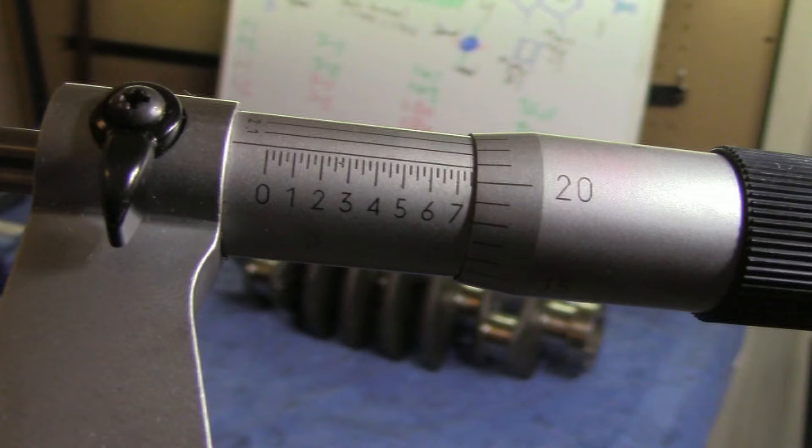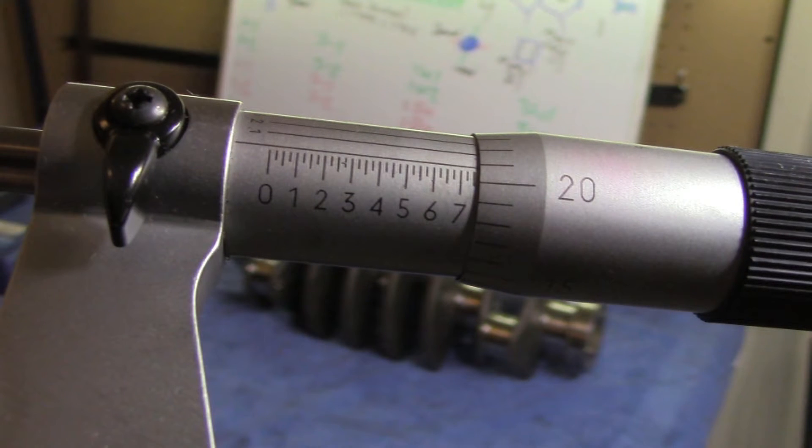So just from the reading on the barrel, we have one point seven five zero inches, or one inch and seven hundred and fifty thousandths.